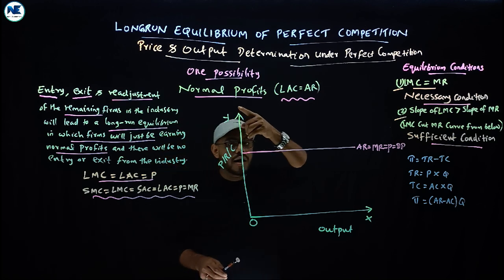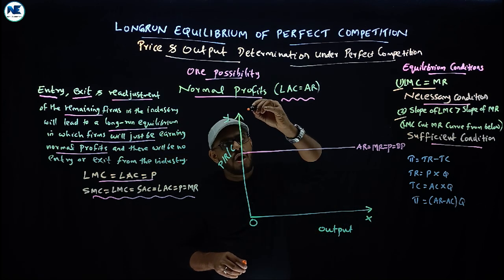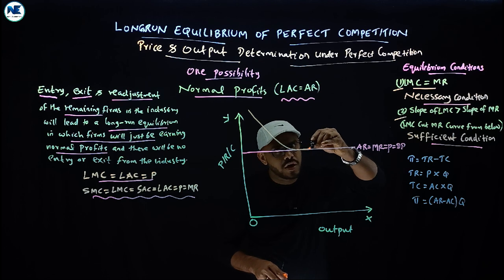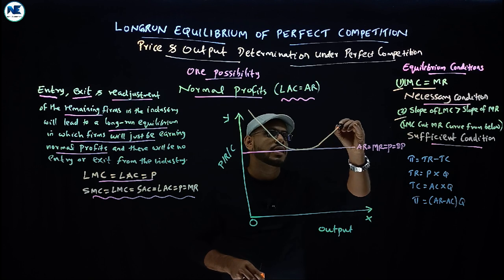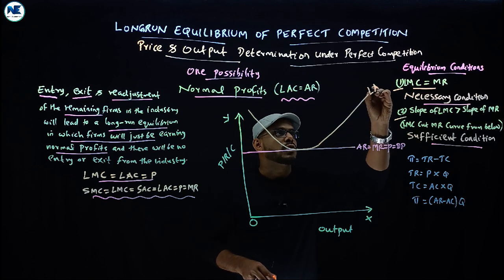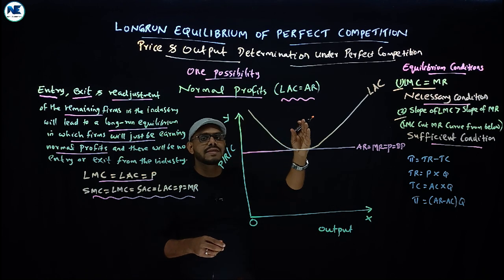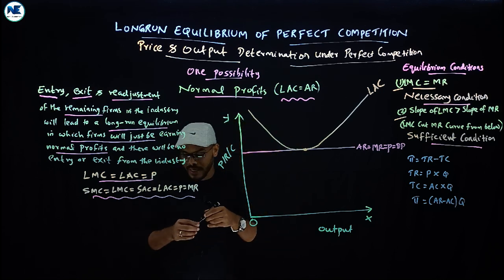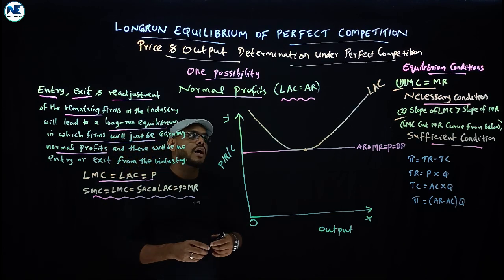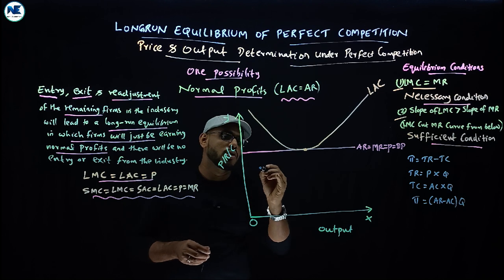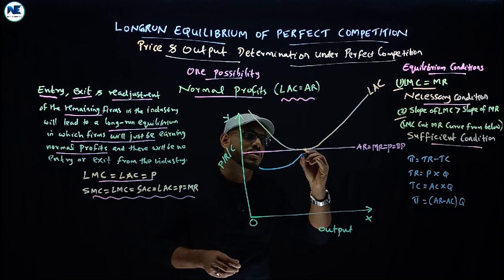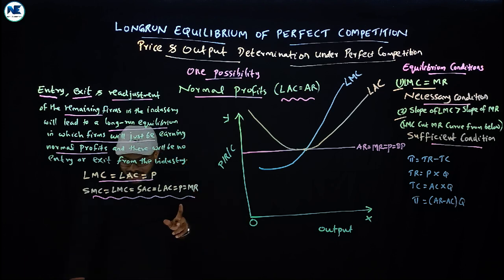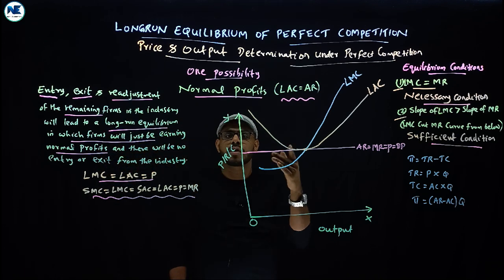Next, we draw the long-run average cost curve, which is U-shaped. The AR equals MR equals P line is tangent to the minimum point of the long-run average cost curve. We also draw the long-run marginal cost curve, which passes through the minimum point of LAC. The point of tangency is the equilibrium point, giving us the equilibrium output on the horizontal axis and equilibrium price on the vertical axis — the firm earns normal profit.